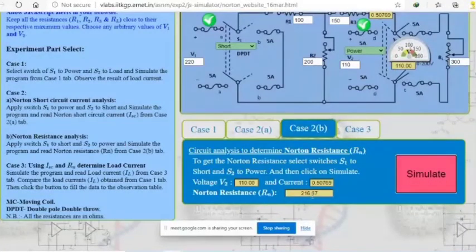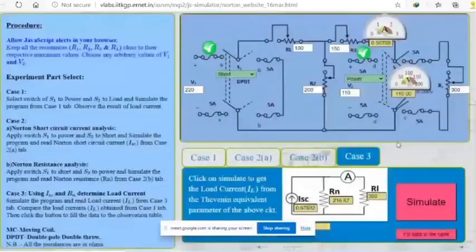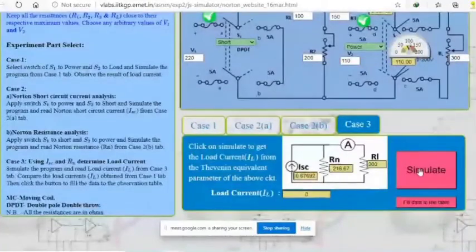Hence we already have Rn and Isc with us. Using this Rn and Isc in case 3, we can easily find load current just by simply clicking simulate.